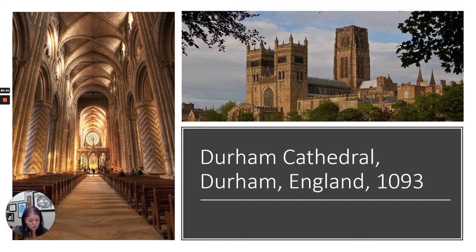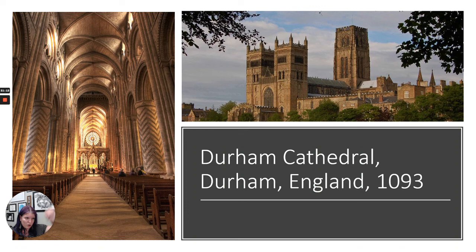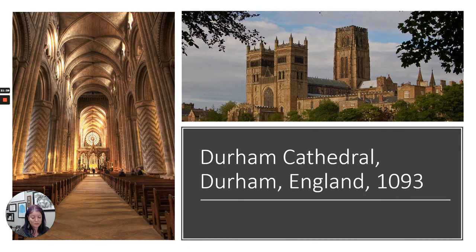Inside Durham you'll notice groin vaults — seven-part vaults, each covering two bays. The pillars are ornamented with carved abstract designs — a sort of chevron design — which is something new and particularly English looking. We also have slightly pointy arches and ribbed groin vaults, both of which are very important in the Gothic period coming next. We have quadrant arches on the buttresses that are a precursor to flying buttresses in the Gothic. So we have this segue into the Gothic with Normandy and England at this time.